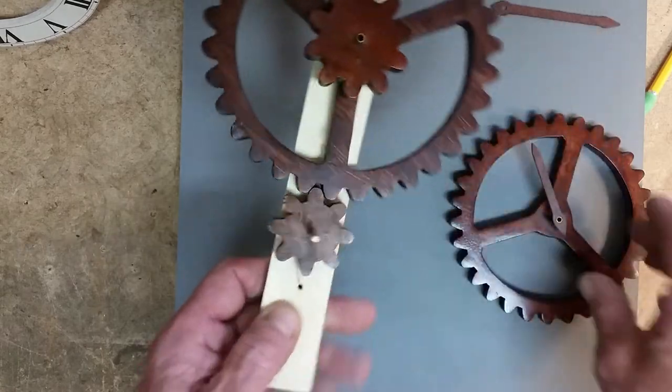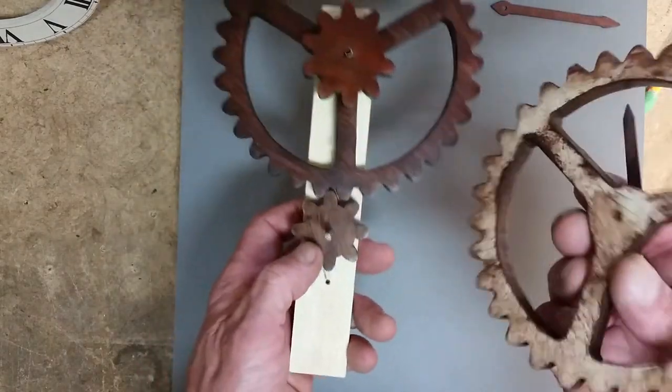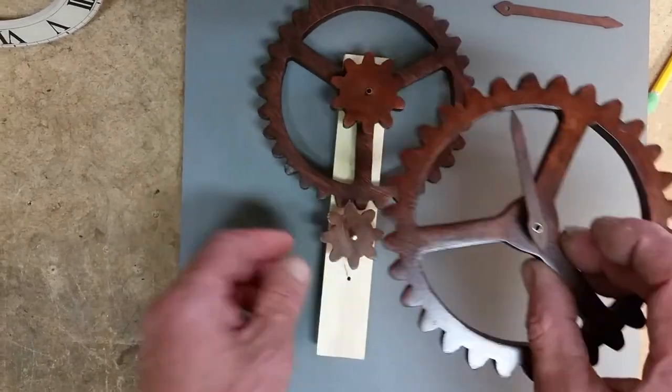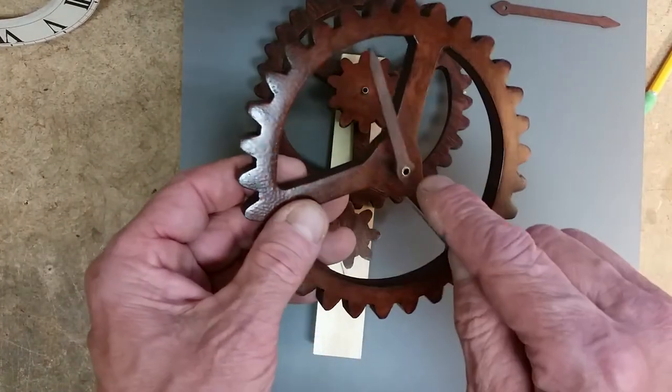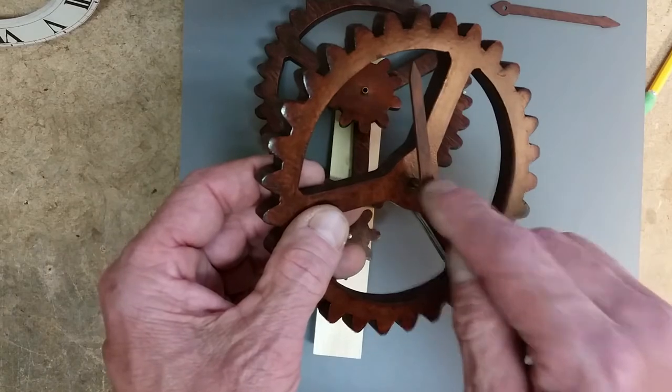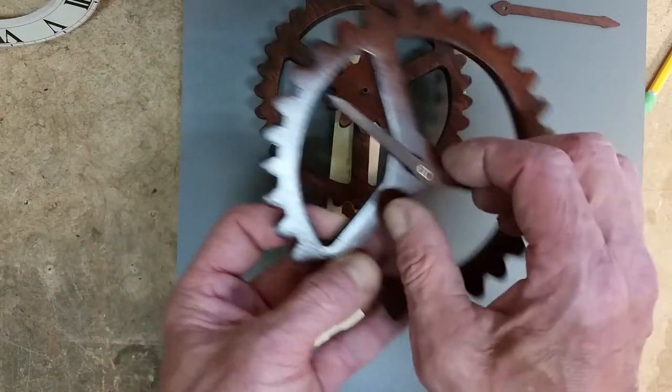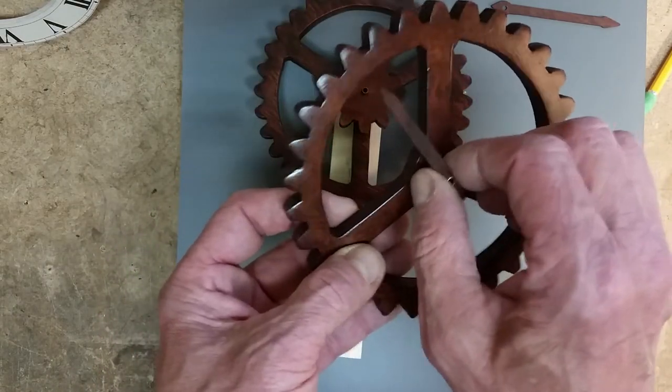And then this hour wheel is important because it has also a 5/32 inch tubing on there and the hour hand is directly attached to that tubing.